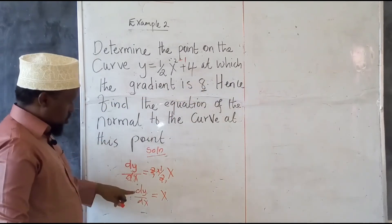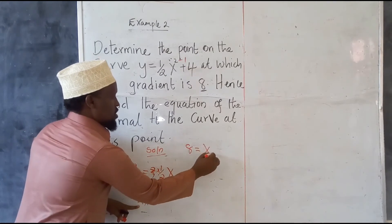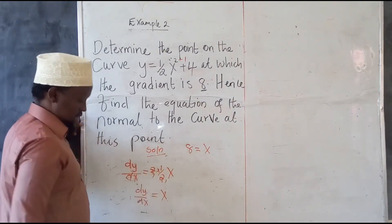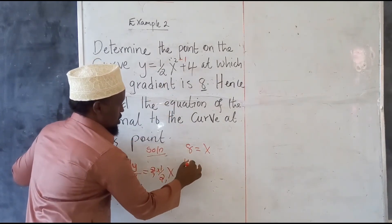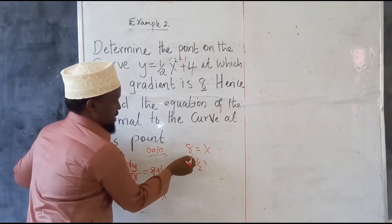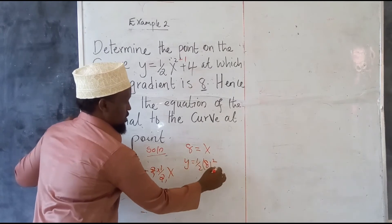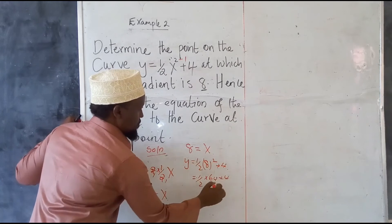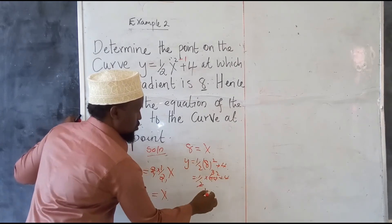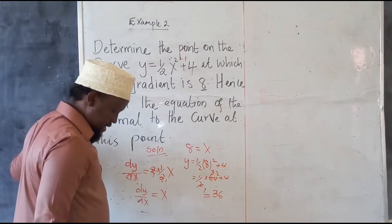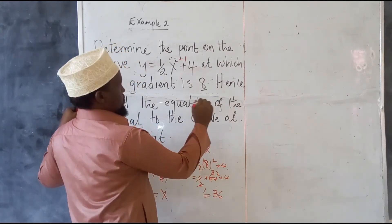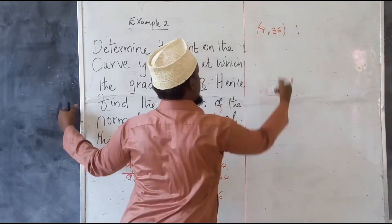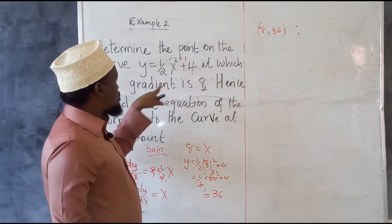With x equal to 8, we find y using the equation y equals one half x squared plus 4. Substituting x equals 8: y equals one half times 64 plus 4, which equals 32 plus 4, giving y equals 36. So the point on the curve where the gradient is 8 is (8, 36).